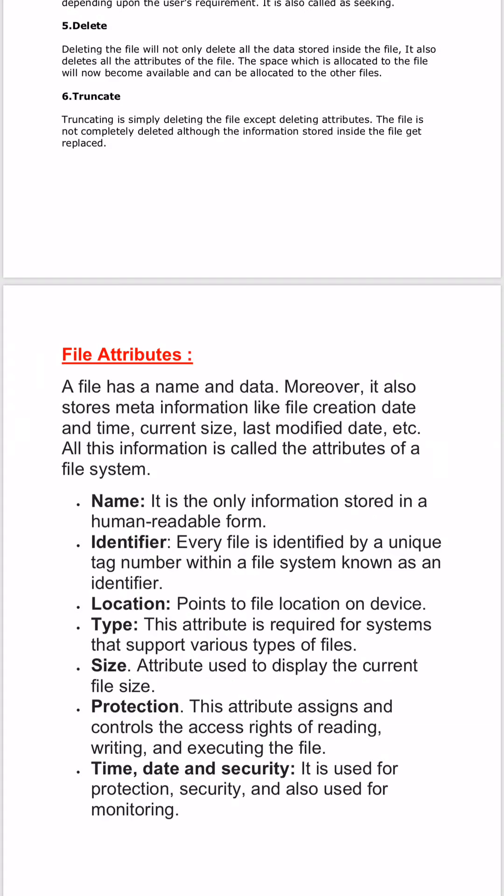So these are the file attributes. Basically, every file in the system has a name, an identifier, a location, a size, a date it was created or modified, and the time it was created. All these are the attributes of the file.